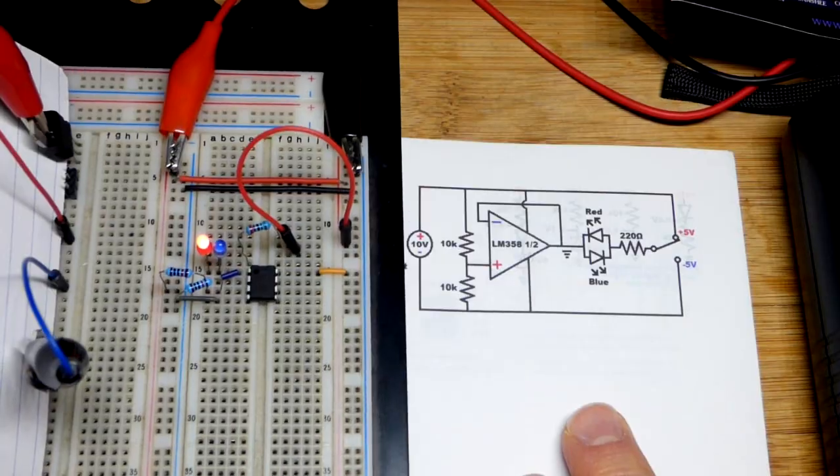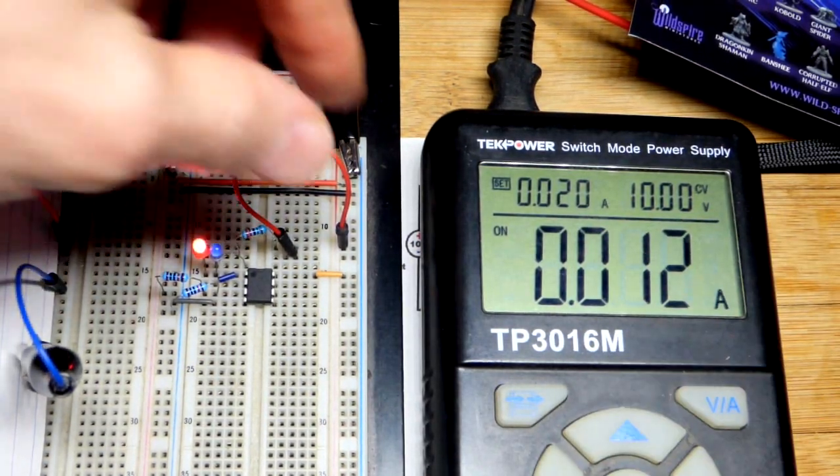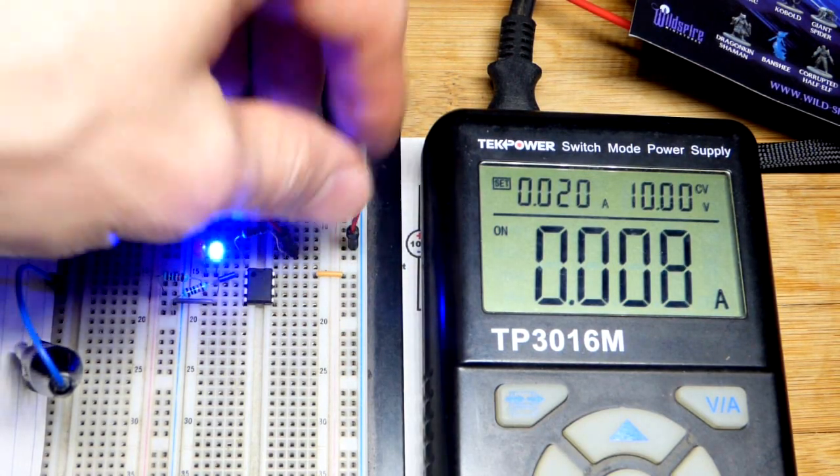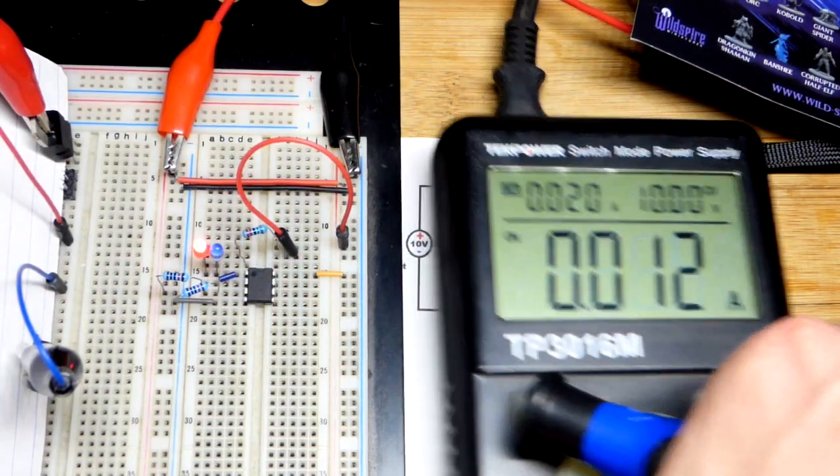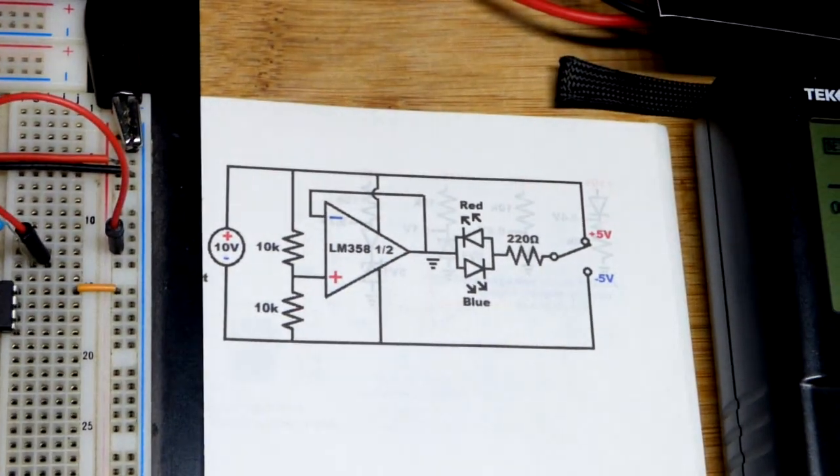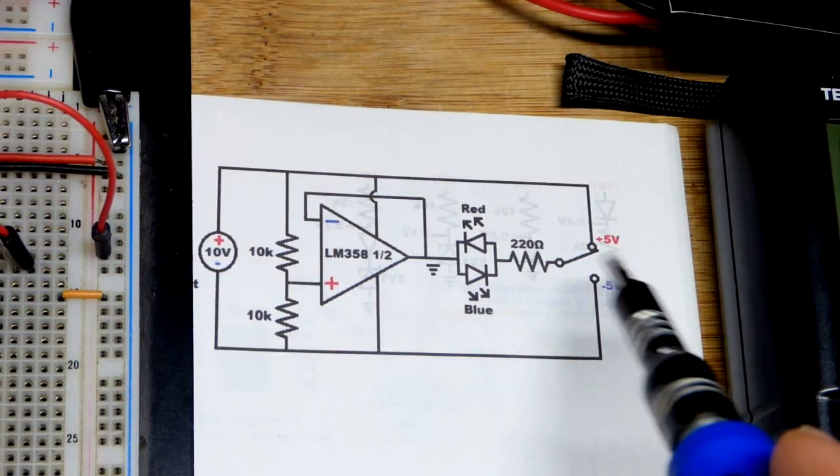I'll zoom in and you can see we got 10 volts at the supply. About 12 milliamps of current for the red LED and about 8 for the blue LED. Blue LED drops a little bit more voltage. They both have the same current setting resistor. Since the blue LED is going to drop about a volt more, it's going to have less current flowing through it.